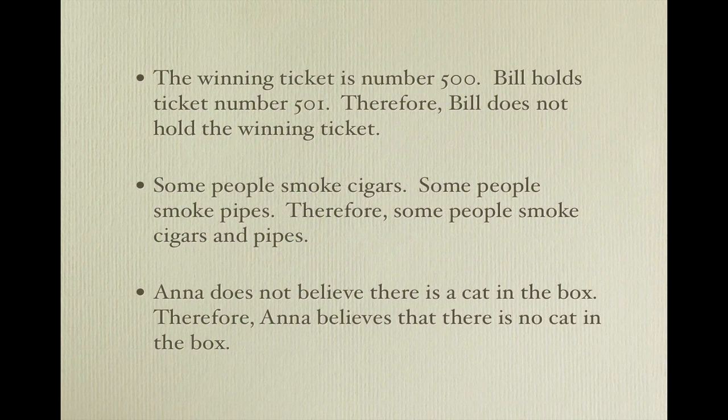Here were the exercises. First: the winning ticket is number 500, Bill holds ticket number 501, therefore Bill does not hold the winning ticket. Second: some people smoke cigars, some people smoke pipes, therefore some people smoke cigars and pipes. And third: Anna does not believe there is a cat in a box, therefore Anna believes that there is no cat in the box.